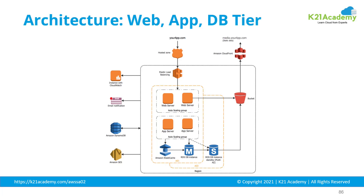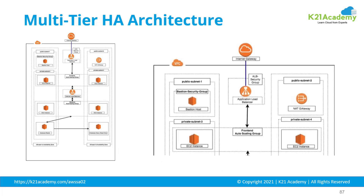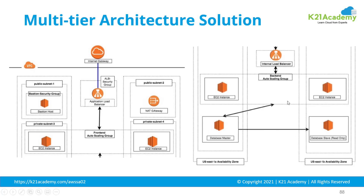Depending on what program you are watching, we may go and do an entire project on this for solution architects. Similarly, for DevOps, we do a separate DevOps project covering end-to-end CI/CD. For high availability architecture, you have front-end servers connecting through the internet gateway to the load balancer. The load balancer forwards requests to EC2 — Elastic Compute, your virtual machines — which then forwards to the database server. This is how you deploy three-tier architecture: web tier, app tier, and database tier, which you can replicate in the cloud.